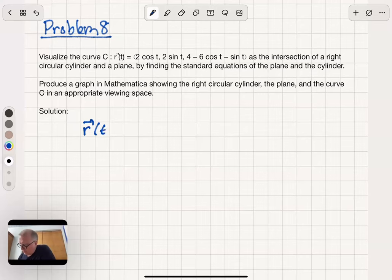Remember this curve, r of t, is a description of the x of t, y of t, and z of t positions of the curve at any time t. So you think of the 2 cosine t as the x of t, 2 sine t is the y of t, and the 4 minus 6 cosine t minus sine t as the z of t.